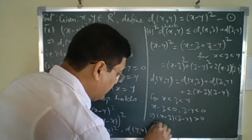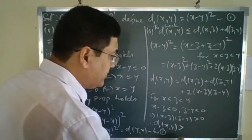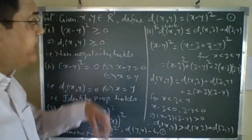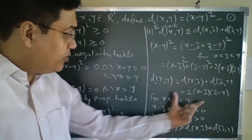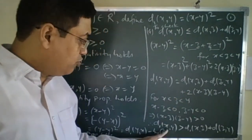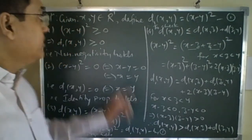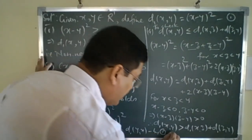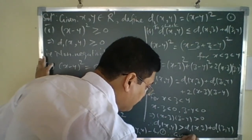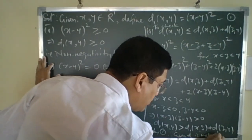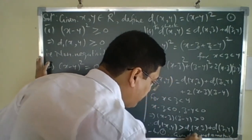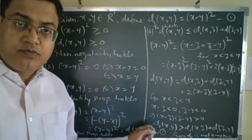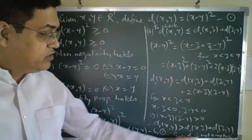Therefore d1(x,y) = d1(x,z) + d1(z,y) + 2(x−z)(z−y) > d1(x,z) + d1(z,y). This means d1(x,y) > d1(x,z) + d1(z,y), so the triangle inequality does not hold. Hence the given d1 is not a metric.